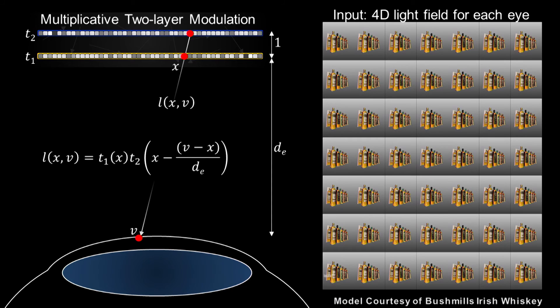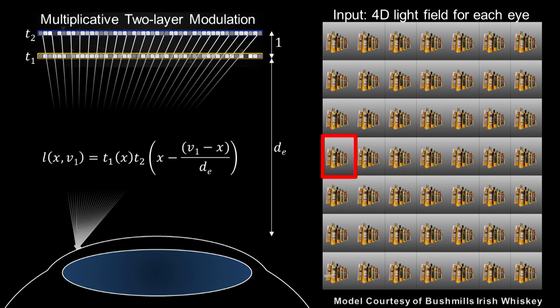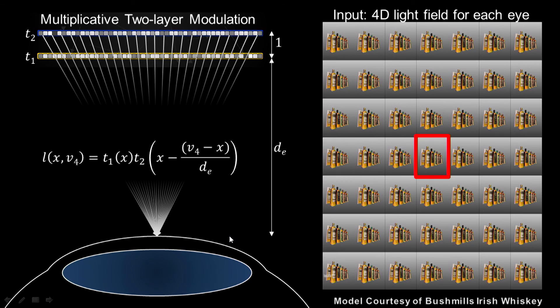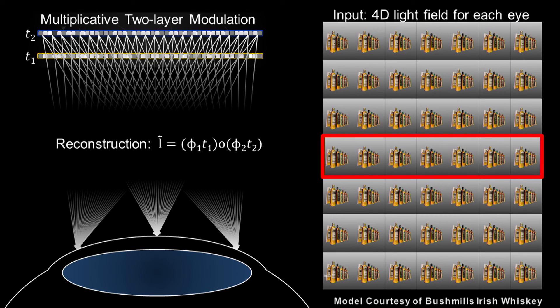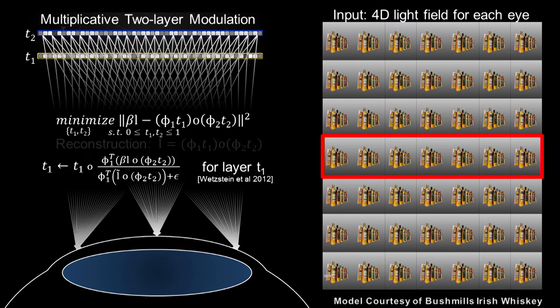With multiplicative two-layer modulation, we can define each light ray being a multiplication of the two pixels on the two panels. We can define each view being a set of rays entering the eye at a specific location. For example, this is the central view, and this is the rightmost view. A complete description of the light field can be represented using a multiplication of the two panels, and this allows for an inverse optimization problem we know how to solve efficiently.